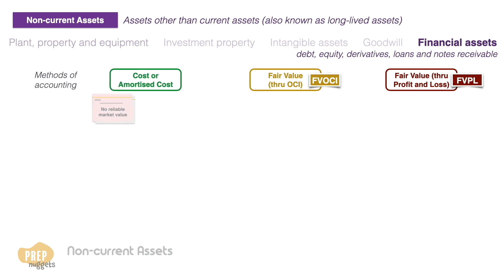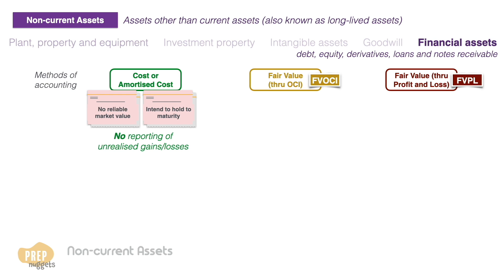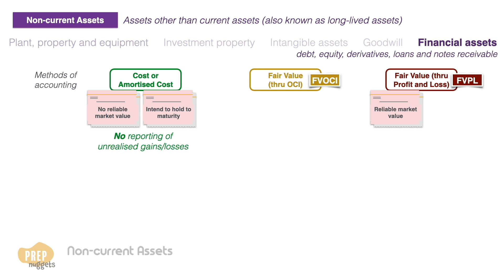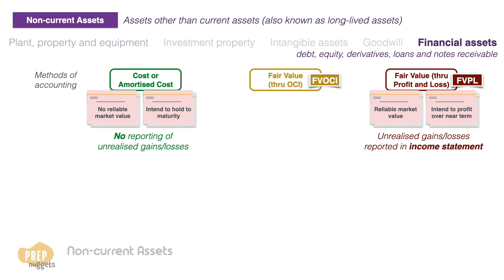In general, securities that do not have a reliable market value should be valued at cost. Debt securities purchased with the intent to be held to maturity should be valued at amortized cost, and unrealized gains and losses should not be recorded for such securities. On the other end, securities that have reliable market values and are bought with the intent to profit over the near term should be valued at fair value through profit and loss, with unrealized gains and losses reported on the income statement.